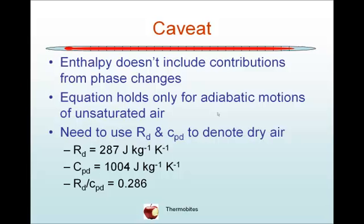The specific gas constant for dry air is 287 joules per kilogram per kelvin, and that's a value worth memorizing. And Cpd, the specific heat at constant pressure for dry air, is 1004 joules per kilogram per kelvin. And so their ratio, as appears in Poisson's equation, is 0.286.